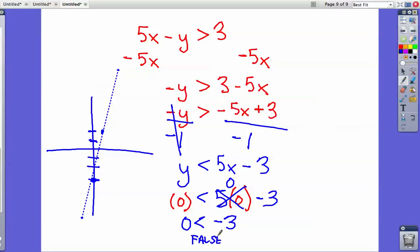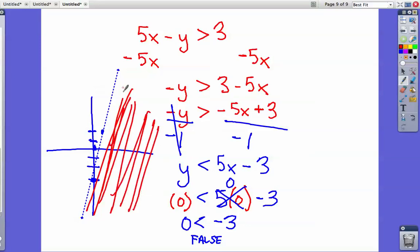So we look at the side with the origin. This side over here is the side with the origin. But since it was false, we shade in the side that does not have the origin. If it had been true, we would have shaded in the side with the origin. And that is a brief introduction to sketching inequalities.